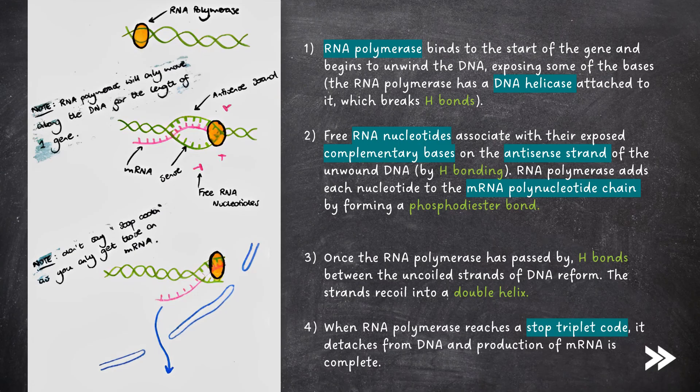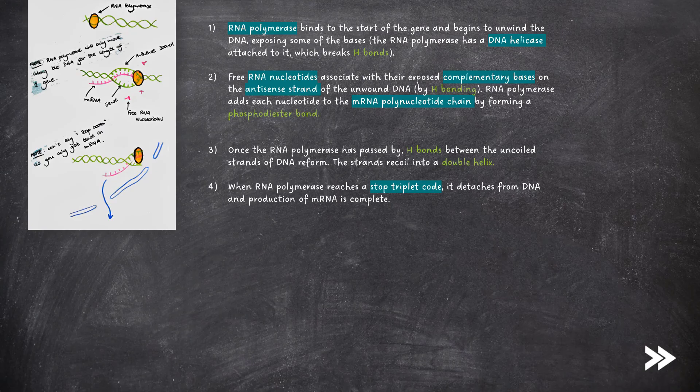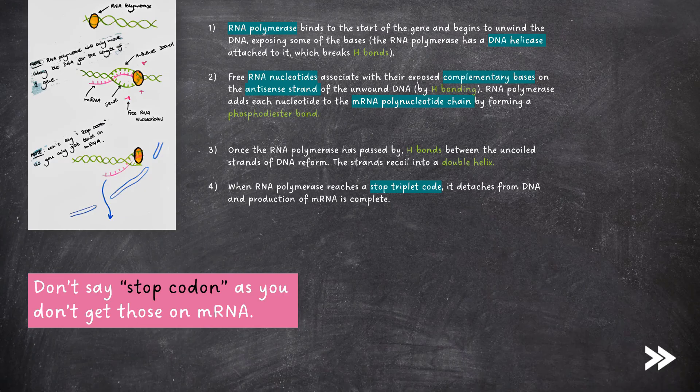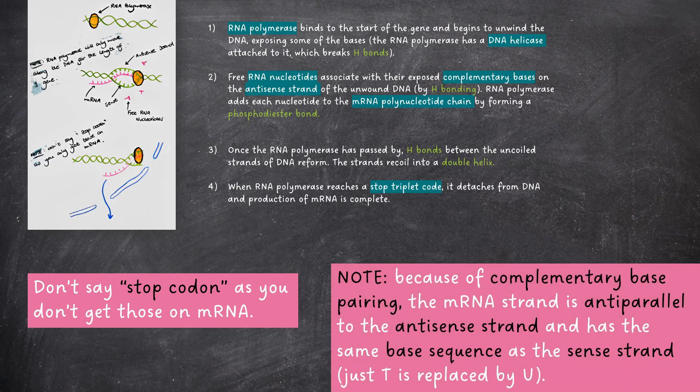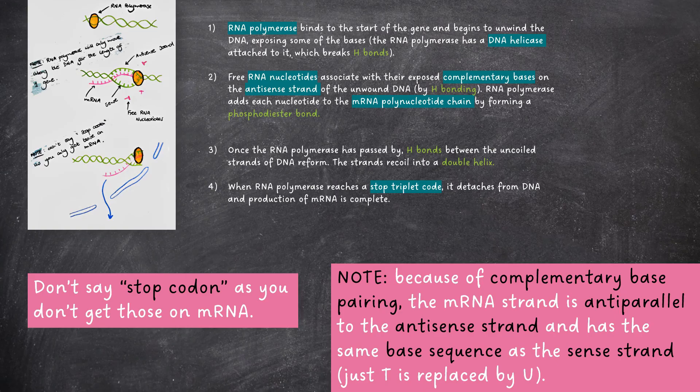When the RNA polymerase reaches a stop triplet code, it detaches from the DNA and the production of mRNA is complete. Be sure not to get mixed up with the words triplet code and codon, as you do not get stop codons on DNA, you only get stop triplet codes. Note that because of the complementary base pairing, the mRNA strand is anti-parallel to the antisense strand and has the same base sequence as the sense strand, just that thymine is replaced by uracil.